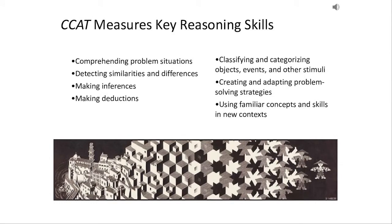CCAT measures reasoning skills. It measures a student's ability to process information and understand their learning — things like comprehending problem situations, creating and adapting problem-solving strategies, using familiar concepts and skills in new contexts, making inferences and deductions, or categorizing and classifying objects, events, or other information. These are all the skills that we know are keys to success in learning.